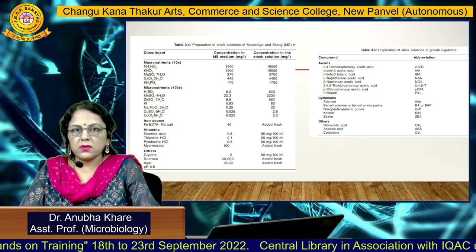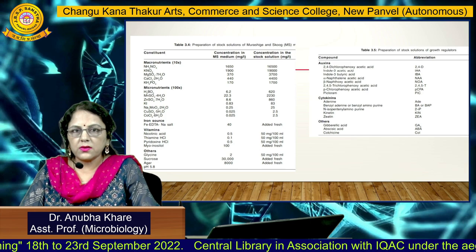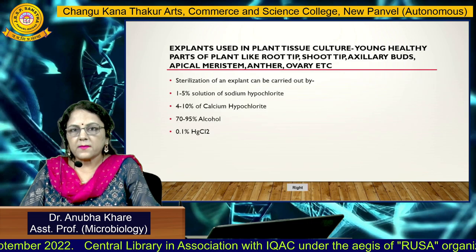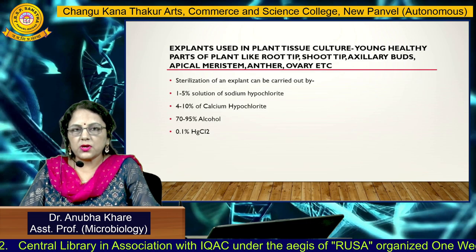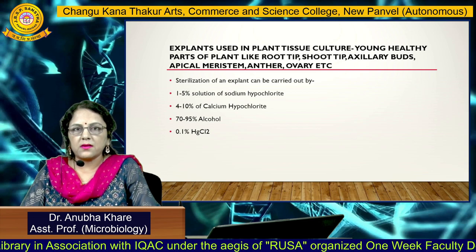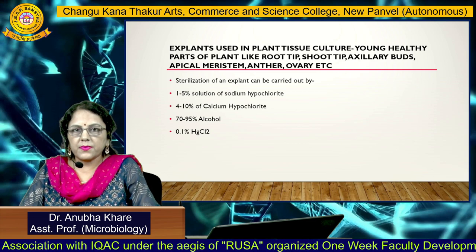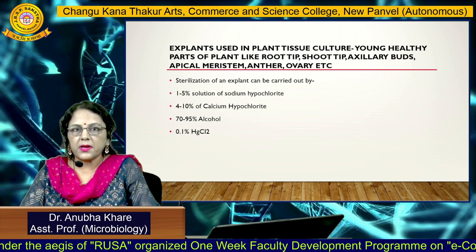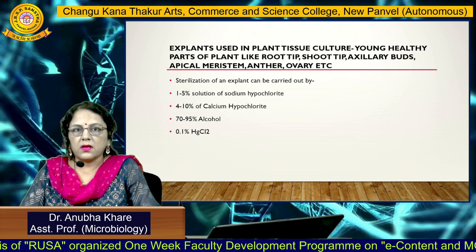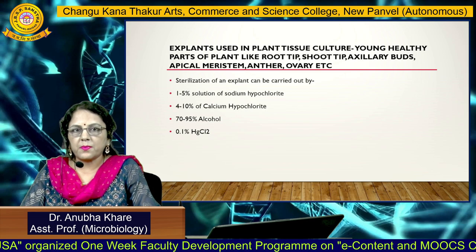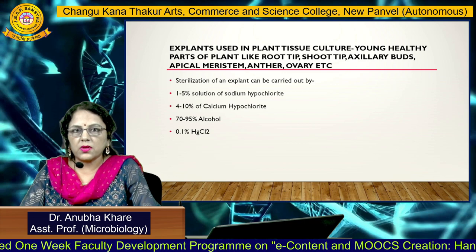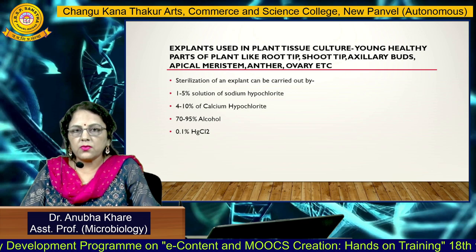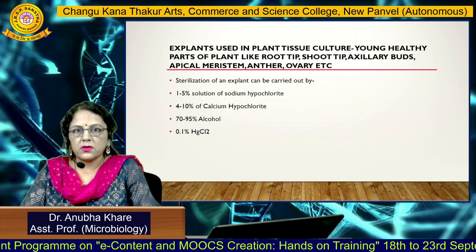We have to add all the nutrients in a flask, add 1 liter of distilled water, and sterilize in an autoclave. The explants used in plant tissue culture experiments are young excised parts of either root tip, shoot tip, axillary bud, apical meristem, anther, or ovary. Sterilization of an explant can be carried out using sodium hypochlorite solution, calcium hypochlorite solution, 70 to 95 percent alcohol, or 0.1 percent HgCl₂.